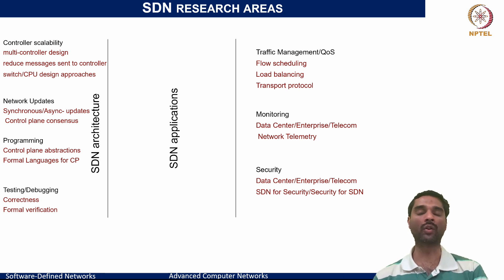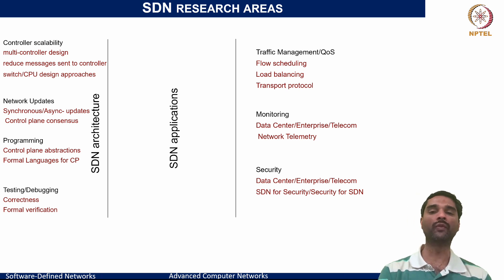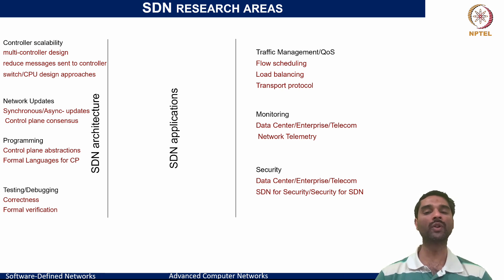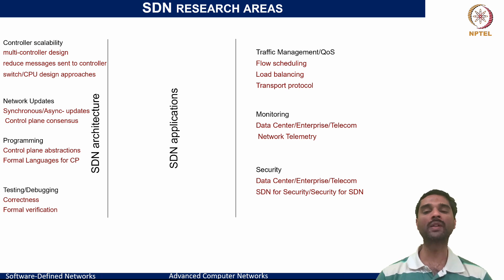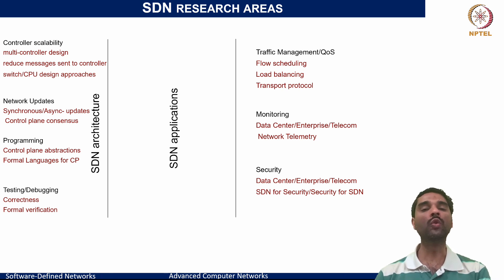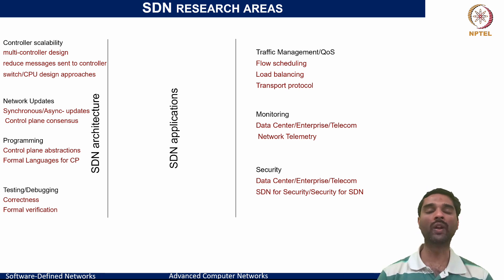In terms of SDN operations, we need to think about how to manage traffic and quality of service. This includes flow scheduling mechanisms, load balancing approaches, and what transport protocols should be used for intercommunication between northbound, southbound interfaces, the NOS, and the networking devices. In data center, enterprise, or telecommunications networks, monitoring has always been a challenge — how do we do fine-grained monitoring to precisely detect and perhaps predict any anomalies that can happen in the network and prevent them before they occur.